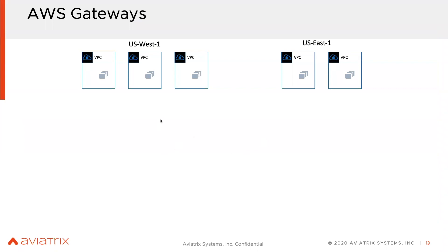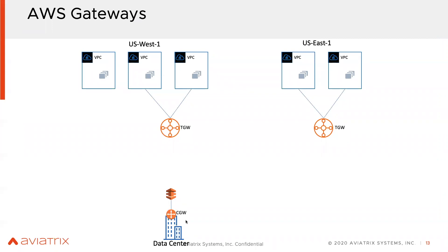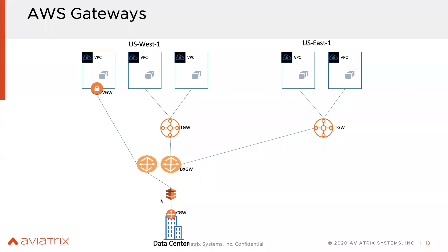Looking at this diagram: on top we have US West and US East with a bunch of VPCs connected using AWS TGW. There's a CGW on the data center side — the physical router — and this customer has purchased a Direct Connect link, connecting it using a transit in US West. US East needs to use that same physical circuit, so they use the Direct Connect gateway. However, the Direct Connect gateway is non-transitive — it can only send traffic in one direction and cannot route traffic transitively across regions. The VGW is there for building tunnels, and the IGW is there for internet connectivity.